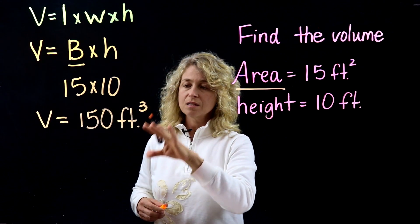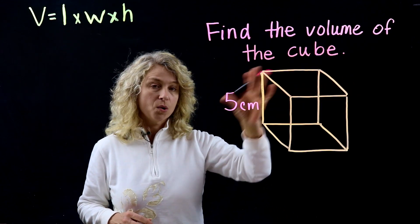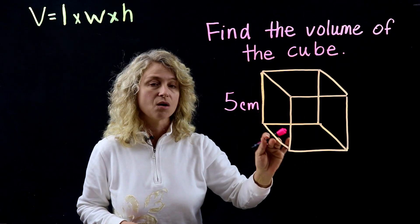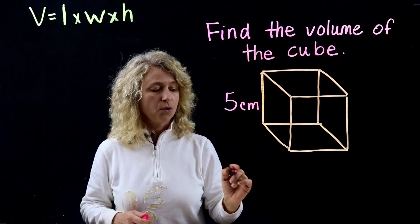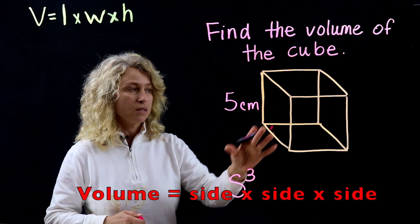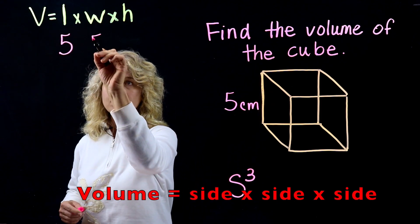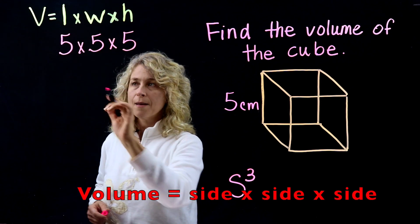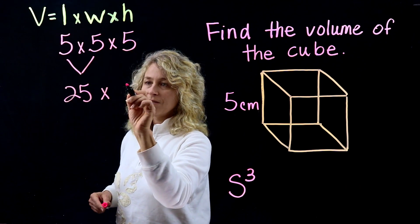Now find the volume of a cube. A cube has all side lengths the same, so the formula is side cubed. Fill in the values: length is 5, width is 5, height is 5. Multiply 5 times 5 is 25, and 25 times 5.